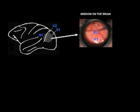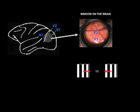To examine this question, we used intrinsic signal optical imaging methods to map motion responsive locations in visual cortex. We view the cortex through implanted windows over visual cortex. This imaging method detects local darkening of the cortex due to deoxygenation changes related to increases in neural activity.